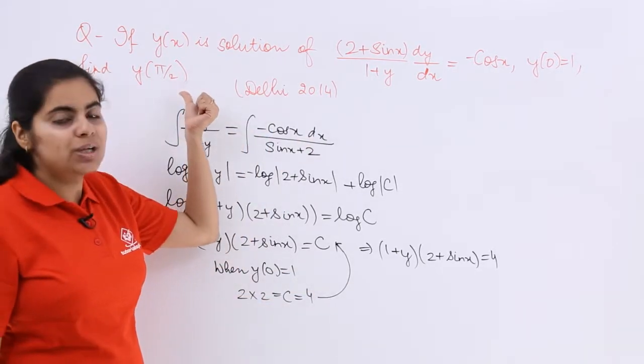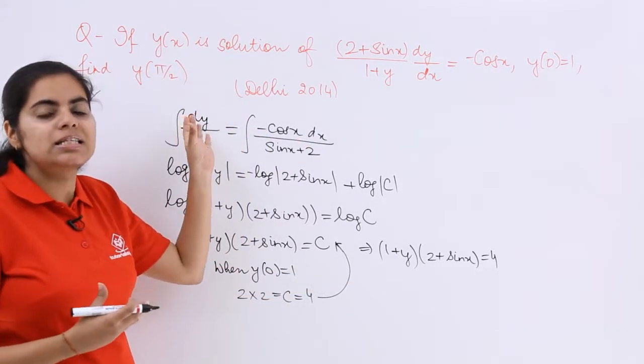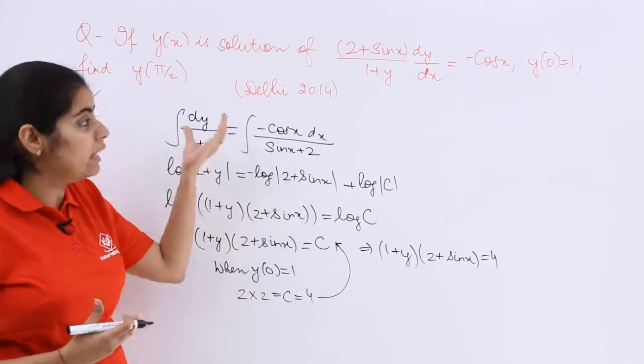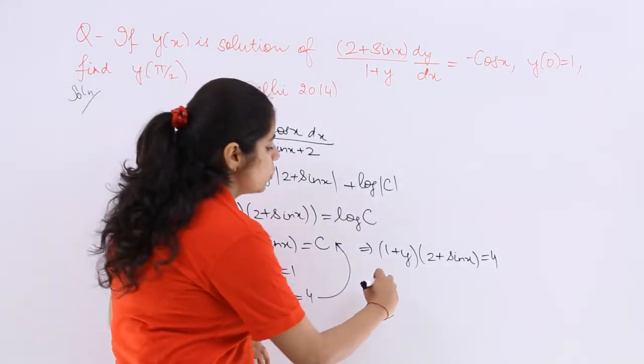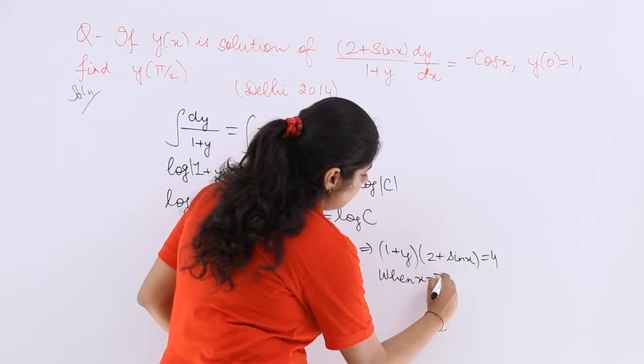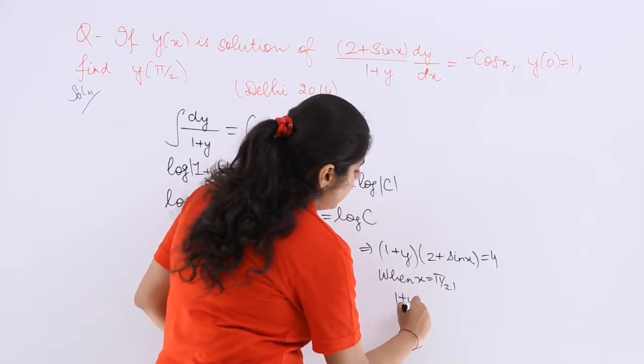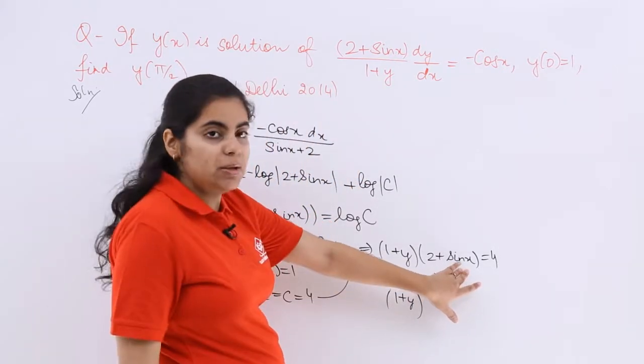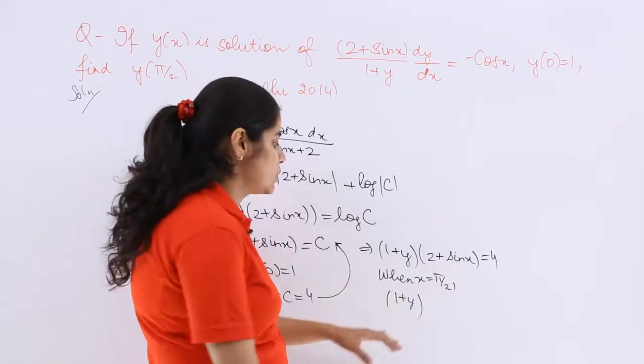Now, what is the next question asked? The question properly was asked as to find out the value of y when x was pi by 2. So when x is pi by 2, what happens? 1 plus y and sin pi by 2 means 1. So 2 plus 1 is 3.